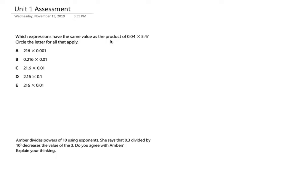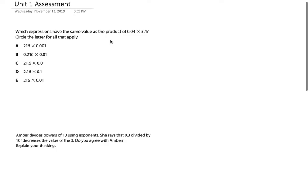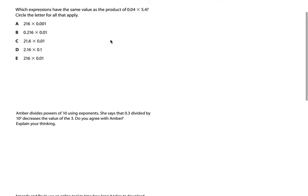Let's get to this quick video. It's 4:30 and Mr. Savage wants to go home. So the first question is: which expressions have the same value as 400 times 5 and 4 tenths? Circle the letter for all that apply. The first thing I need to do is solve this expression, so I'm going to write it out: 5.4 times 400. I'll do 4 times 4 is 16, carry the 1, 4 times 5 is 20, so 21.